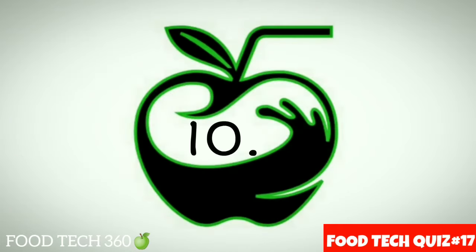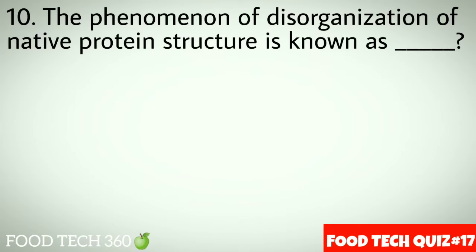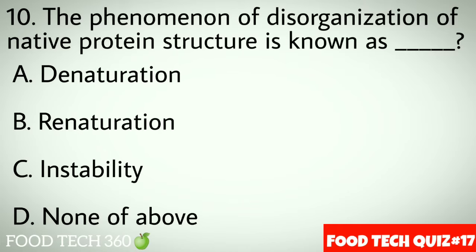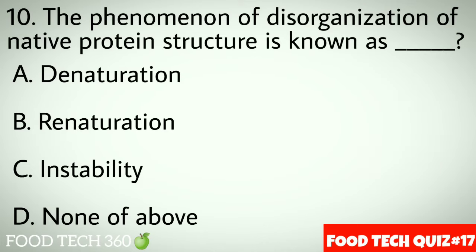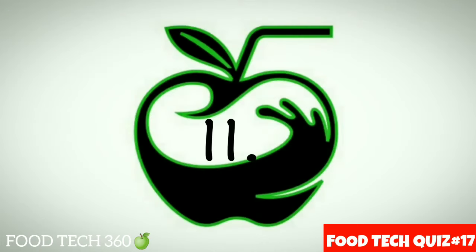Question number 10: The phenomenon of disorganization of native protein structure is known as dash. Options: A. Denaturation, B. Renaturation, C. Instability, D. None of the above. Correct answer: A. Denaturation.